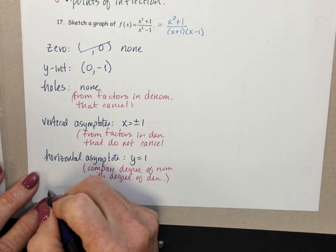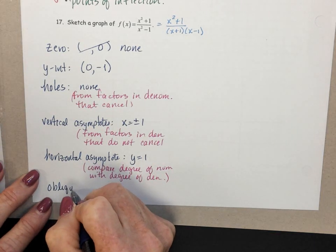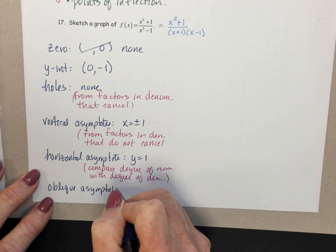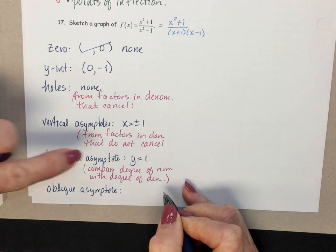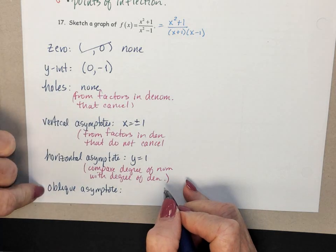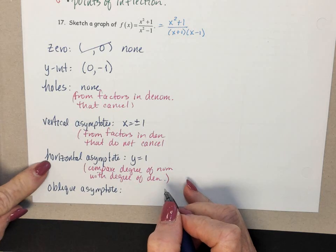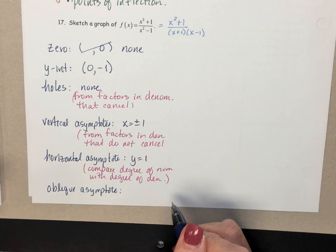And the last one, oblique asymptotes. First off, if there is a horizontal asymptote, there will not be an oblique asymptote. If there is an oblique asymptote, there will not be a horizontal asymptote.